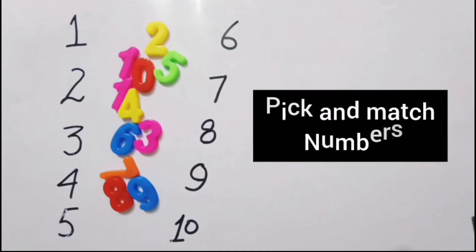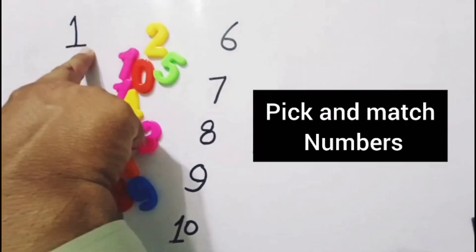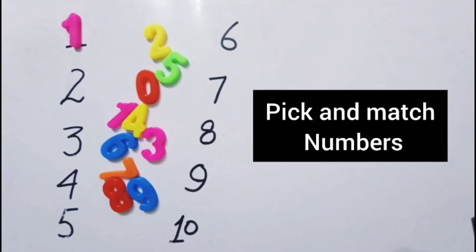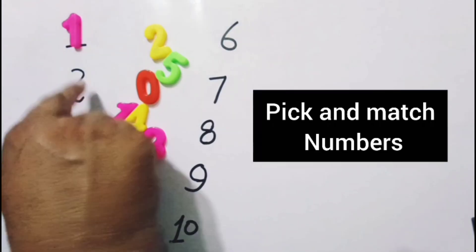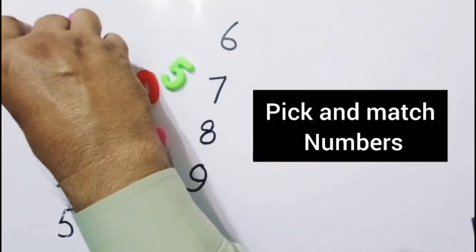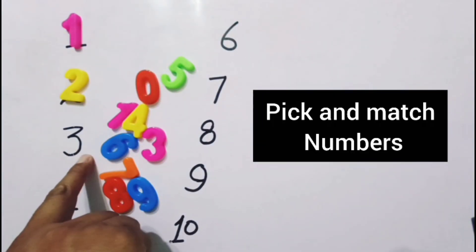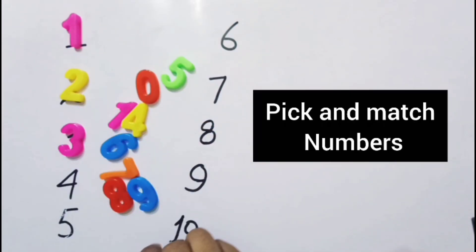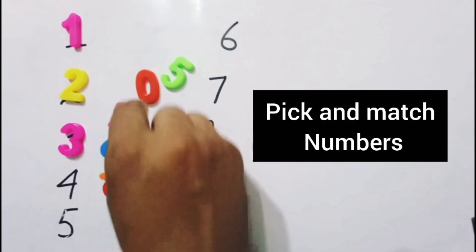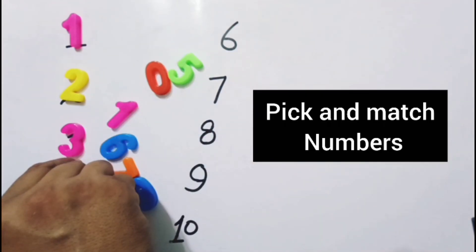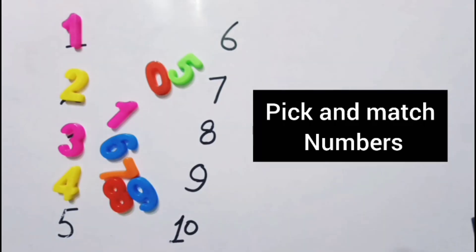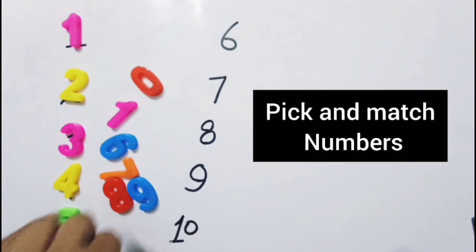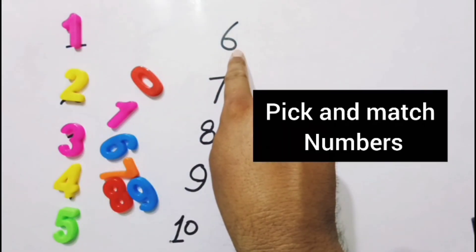Hello kids, let's make the numbers. This is 1, this is 1. This is 2, this is 2. This is 3, this is 3. This is 4, this is 4. This is 5, this is 5.